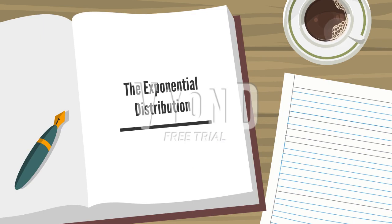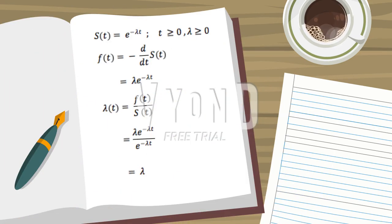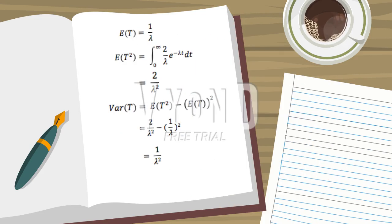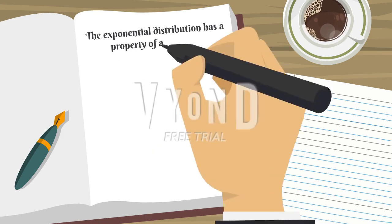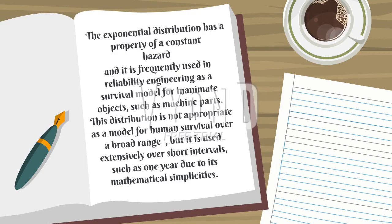The exponential distribution properties: S(t) equals e to the power of negative lambda t, while f(t) equals lambda times e to the power of negative lambda t. Lambda h(t) equals lambda. The expected value of T equals 1 over lambda, and the expected value of T squared equals 2 over lambda squared. Variance of T equals 1 over lambda squared. The exponential distribution has a property of constant hazard, and it is frequently used in reliability engineering as a survival model for inanimate objects such as machine parts. This distribution is not appropriate as a model for human survival.